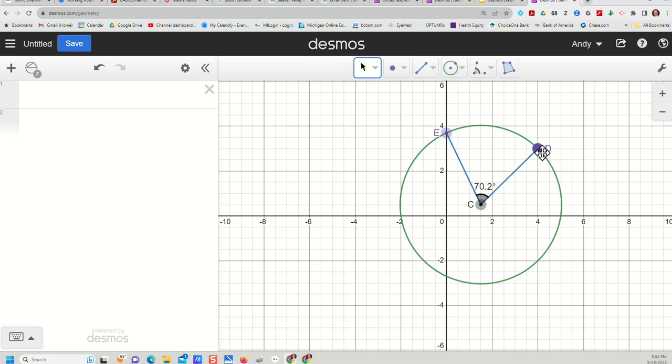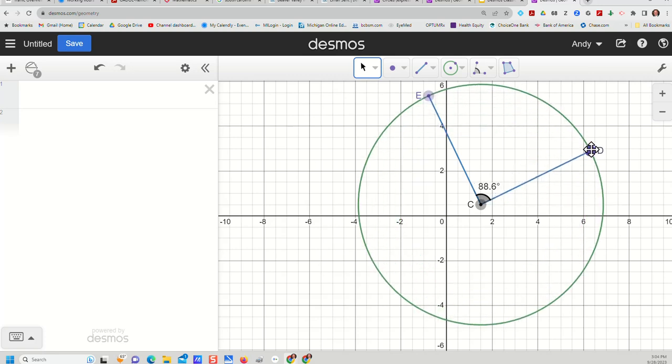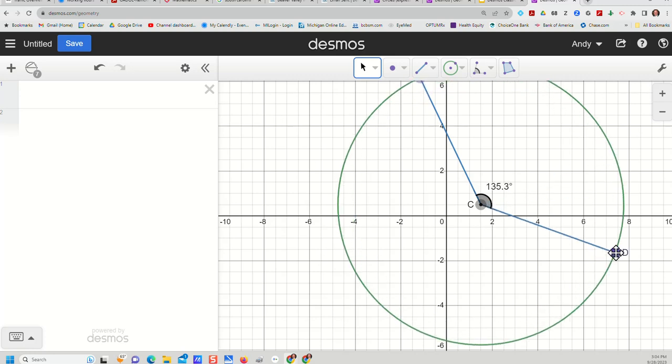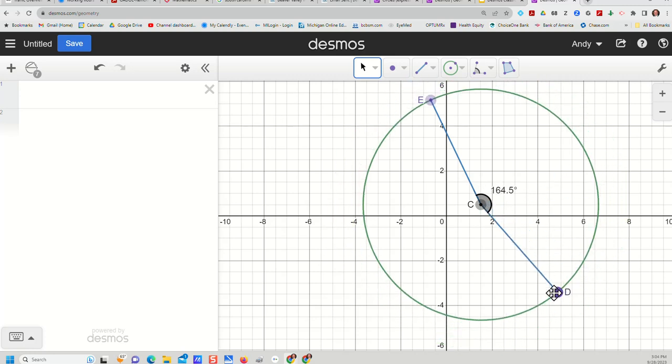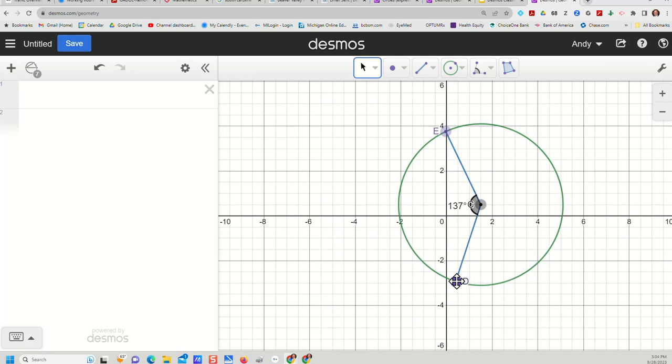I don't know of a way to change that. That's a request that's been made to the Desmos people. But as students manipulate this you'll see the angle changing in real time. So they can create obtuse angles inside and they can also create, if they go far enough, another obtuse angle on the other side.